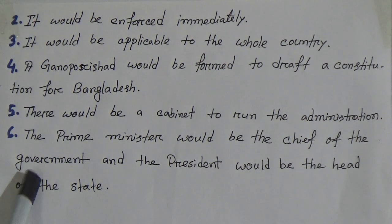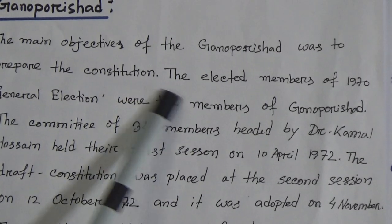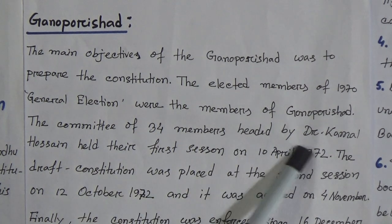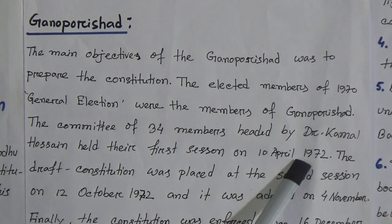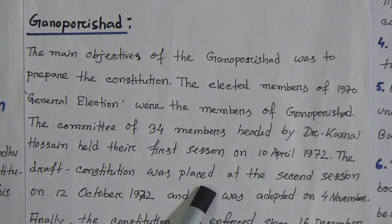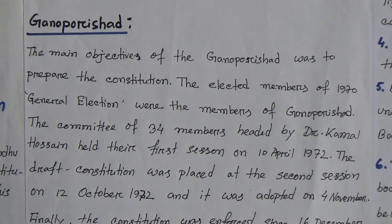From these six features, we learn that to formulate the Constitution, a Gono Parishad was formed. The main objective of the Gono Parishad was to prepare the Constitution. The elected members of the 1970 general election were members of the Gono Parishad. A committee of 34 members headed by Dr. Kamal Hossain held their first session on 10th April 1972 — a very important date in Bangladesh's history. The draft Constitution was placed at the second session on 12th October 1972.